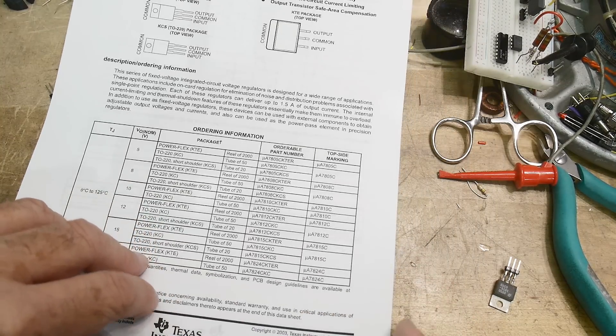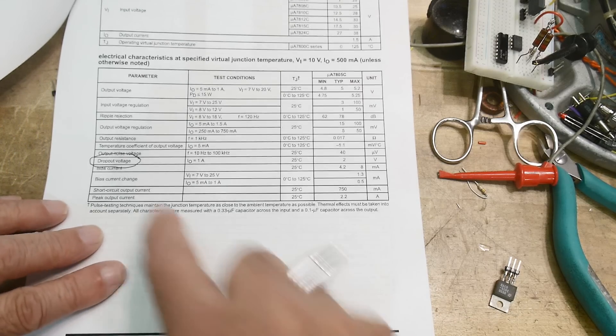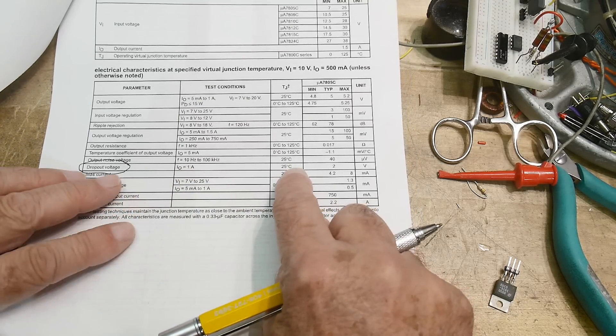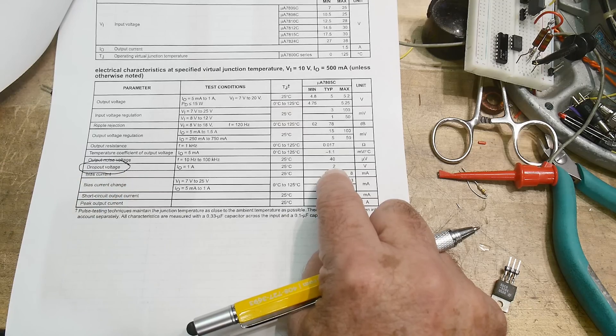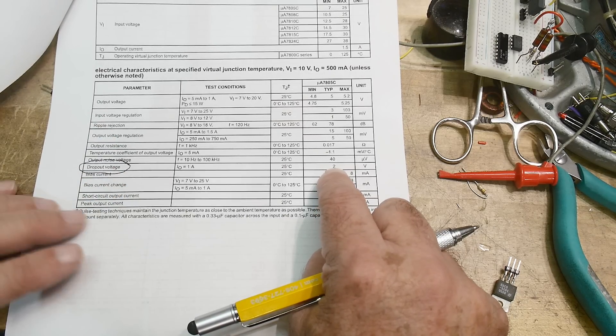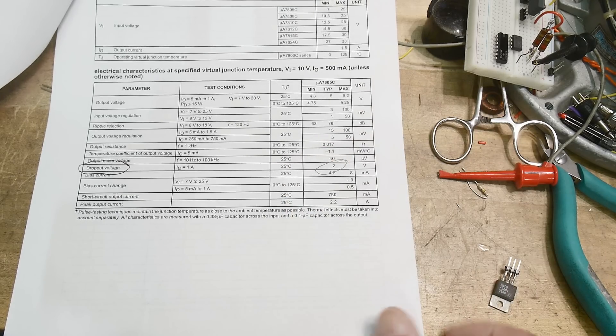But anyway, over here they do tell you the test conditions, which is nice, right on the specification. So they say at one amp, the dropout voltage is two volts. So you need at least two volts above whatever you're regulating. So the dropout here is two volts.